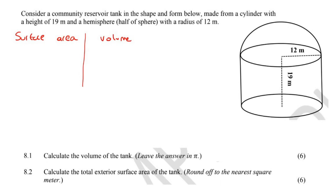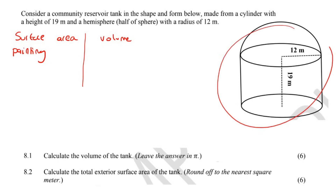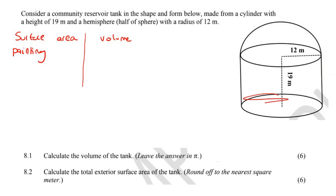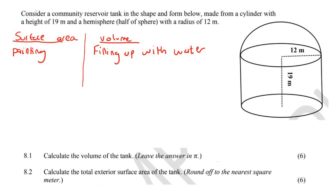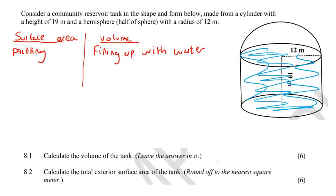With surface area, I want you to think about painting — like if you take paint, that is what surface area is. It is when you paint on the outside of a shape. So for example, if you had to go paint the shape, you would paint on the outside, and sometimes you would paint the bottom, sometimes you won't, depending on the type of question. With volume, I want you to think of filling up with water. You would take the shape and fill it up with water — that would go on the inside. You're filling it up on the inside, whereas with surface area you are painting on the outside. It's very important that you understand that.